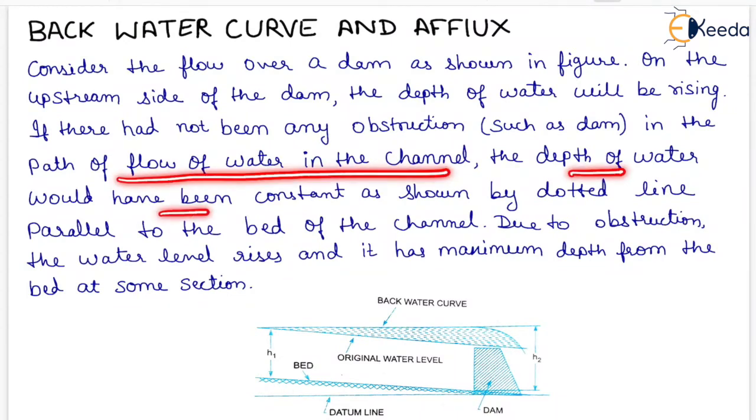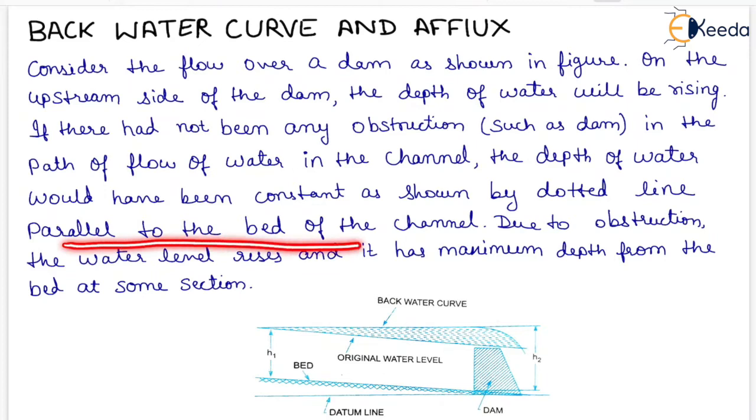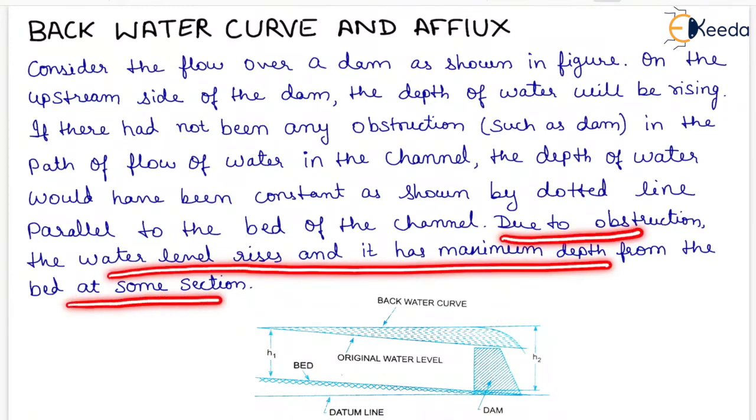the depth of water would have been constant as shown by dotted line parallel to the bed of the channel. Due to obstruction, the water level rises and it has maximum depth from the bed at some section.